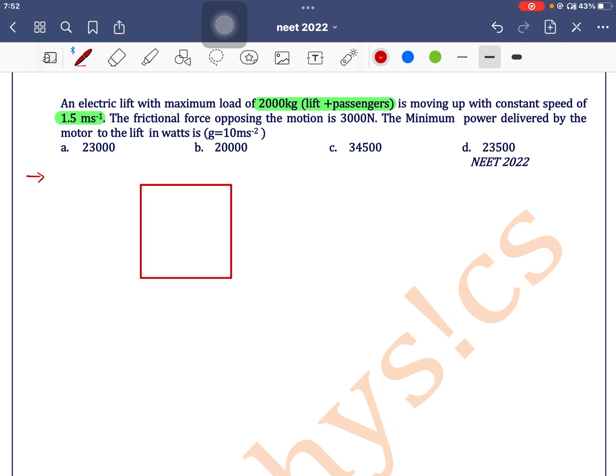We have a lift moving in the upward direction with a constant velocity of 1.5 meters per second. The load of lift and passengers is 2000 kg. The force of gravity acts in the downward direction, which equals mg.